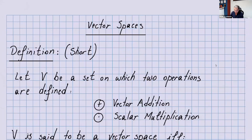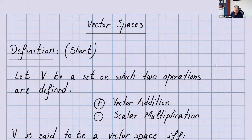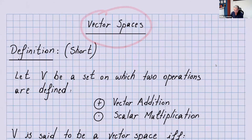Hi everyone, and welcome to this video. In this video, I want to talk about vector spaces, and especially proving vector spaces. In my last video, I talked about vectors and vector spaces and the 10 axioms, but in this video specifically, I want to take an example and show you how you can prove a set of vectors is a vector space.